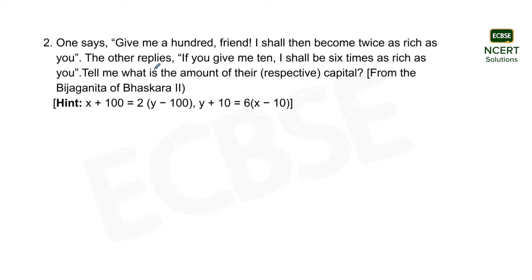This is the reply given by the other person to the first person. If you give me ten, I shall be six times as rich as you. Tell me what is the amount of your capital — from the Vijayagirina of Bhaskara second. The hint provided is: x + 100 = 2(y − 100) and x + 10 = 6(y − 10).